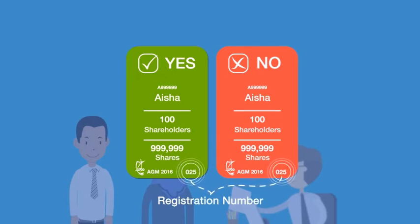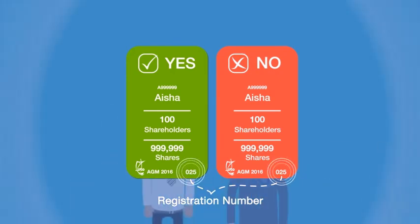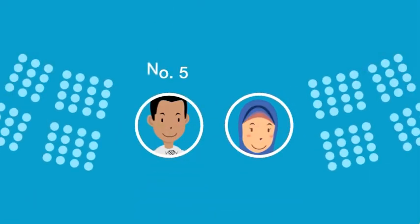This number will appear at the bottom right corner of the card. Ali receives number five yet prefers to sit at the back row. Aisha, on the other hand, received 25 and sits at the front row.